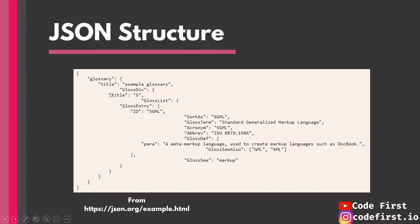Values can be either an object or a list or array of values. For example, 'title' has 'example glossary' as a string value. Meanwhile, another key has an array as its value — there are two values in this array, and the array itself is the value for its key.